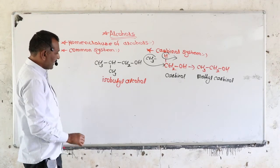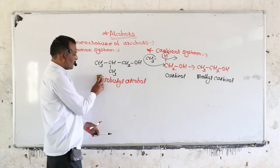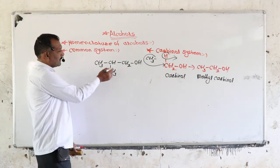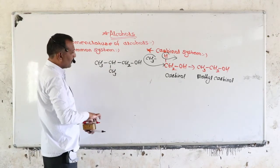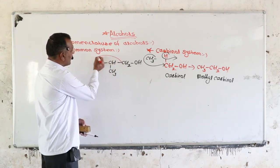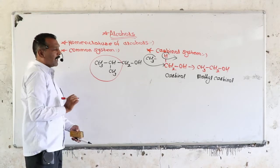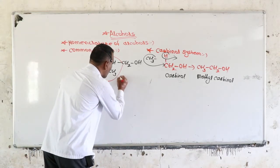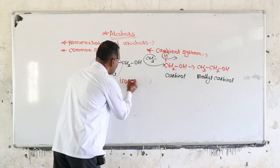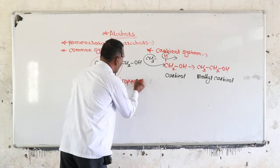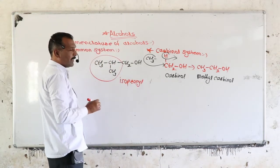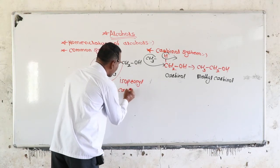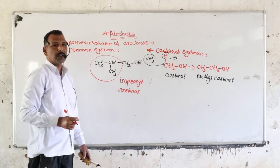For example, consider another alcohol according to the Carbinol system. The introduced alkyl group is the isopropyl group. So write the name of the alkyl group — isopropyl — and then add the word Carbinol. So the name of this alcohol according to the Carbinol system is isopropyl Carbinol.